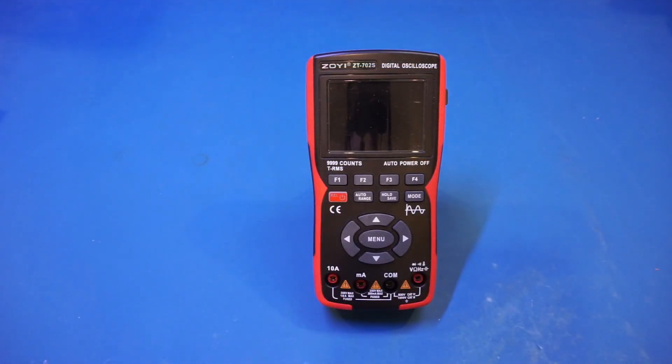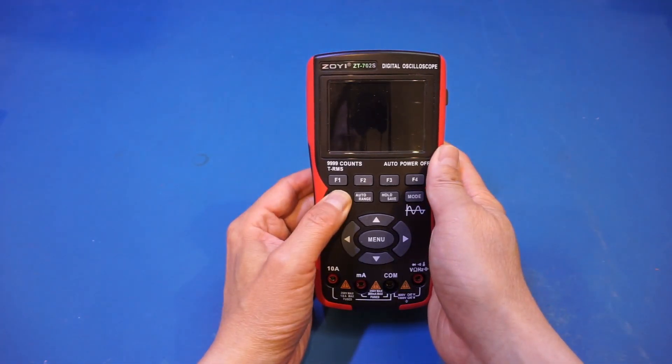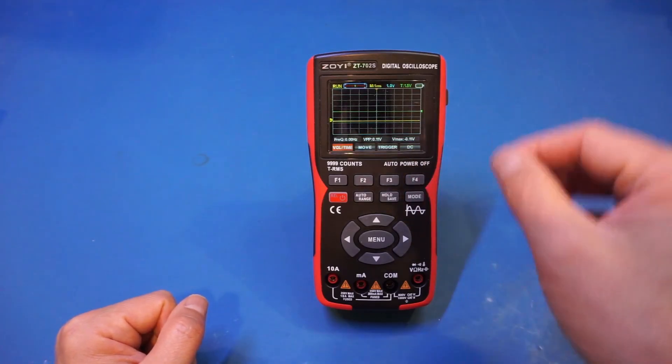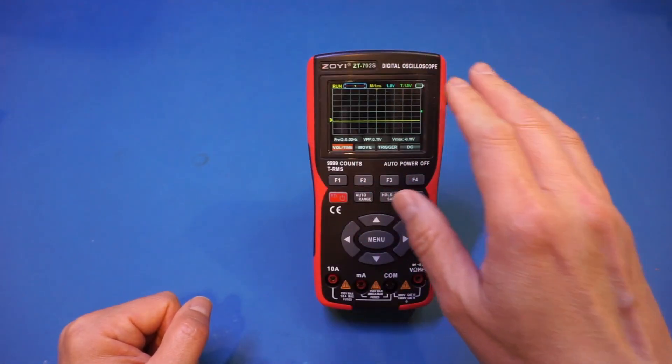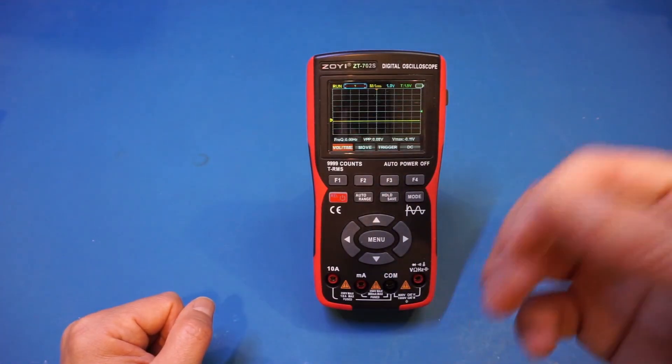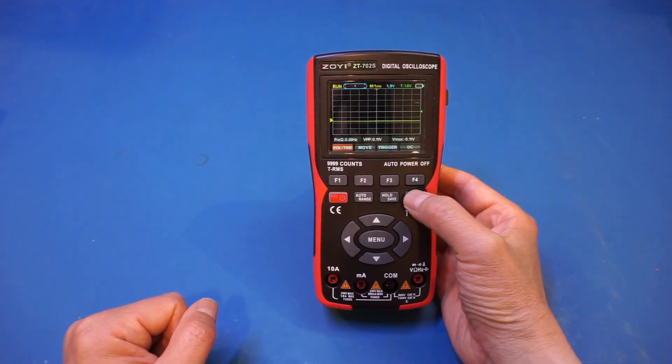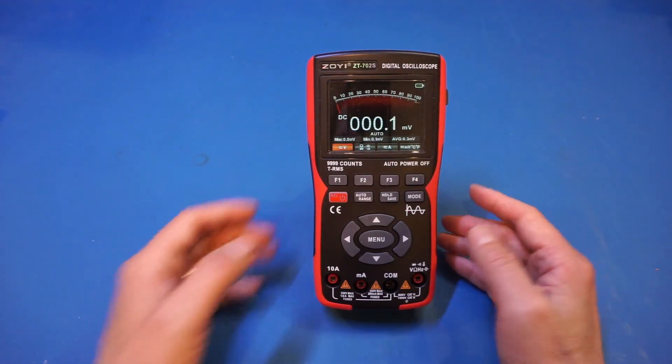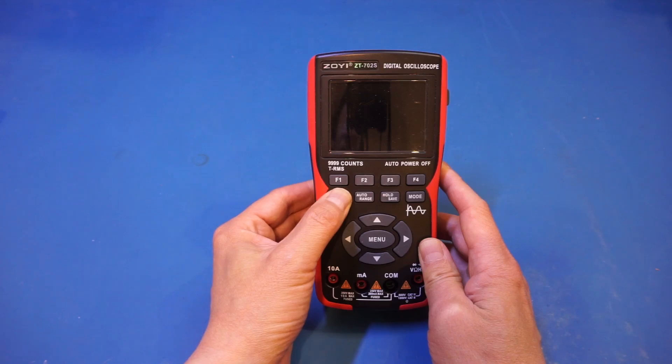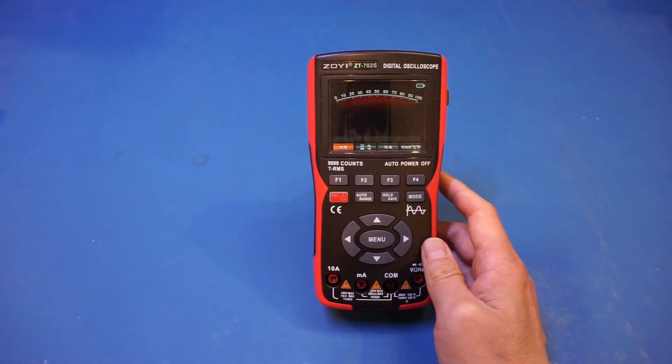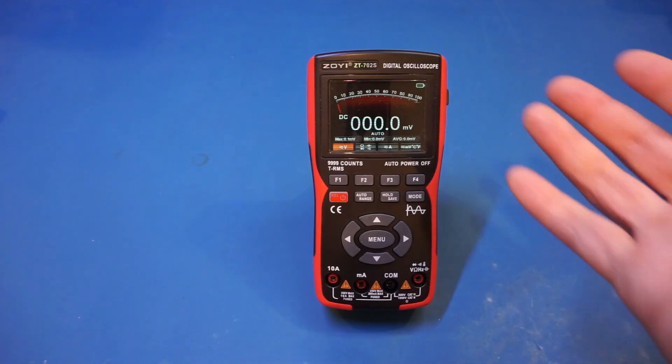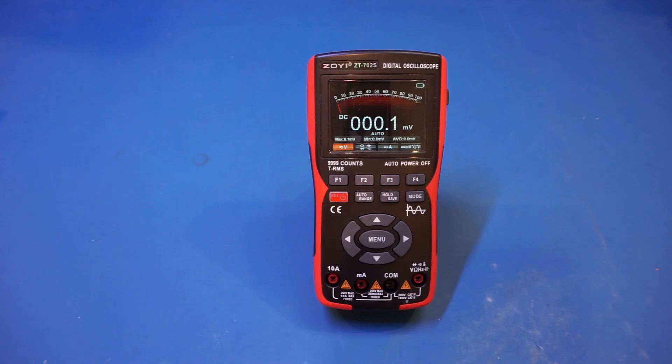And very briefly on the 702S after the upgrade, let's power it up and see if we are able to remember the last power on state. So if you recall, prior to the version upgrade, we were not able to remember the last power on state. If I switch to the multimeter mode next time, it will return to the oscilloscope mode. So let's actually change it to multimeter mode. And let's power it off. And let's power it on. Aha, at least they have fixed that issue. So now we can actually remember the last power on state, which is excellent.